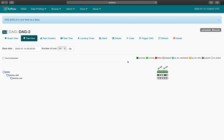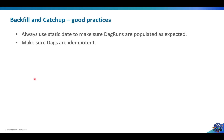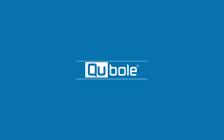Do try playing around with catch-up, different start dates, and schedule intervals to see what happens. For best practices: if you're using catch-up, make sure you have static dates in your DAG — don't use dynamic dates, as you might get unexpected results. The same applies for idempotency — make sure your DAGs are idempotent. That's all for now, see you in the next video, keep practicing, and thank you for watching.